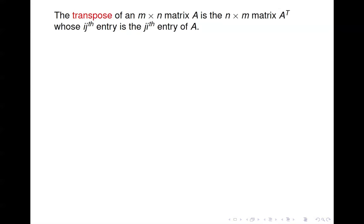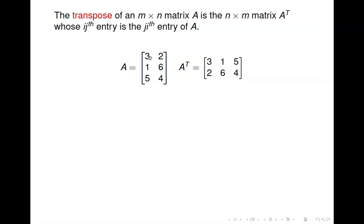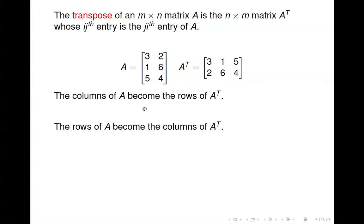The transpose of a matrix is computed by taking the ijth entry of the original matrix and making it the jith entry of the transpose. An easier way to think of it: the columns of A become the rows of A transpose. So column 1 is 3, 1, 5, and row 1 of the transpose is 3, 1, 5. Alternatively, the rows of A become the columns of the transpose.